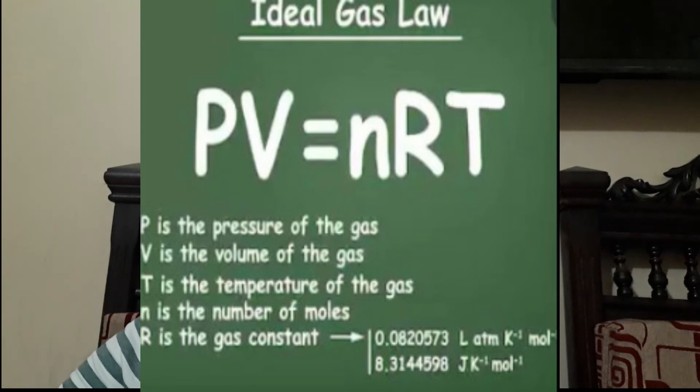This is the general gas constant. Using this equation PV = nRT, we can calculate a number of different variables such as pressure and volume.